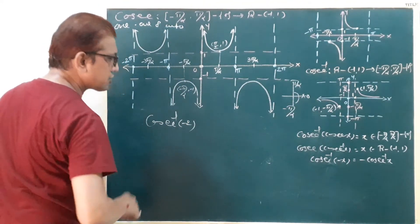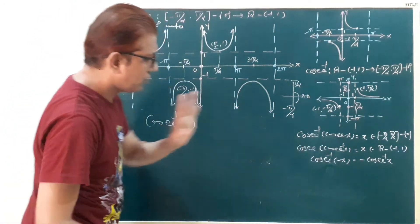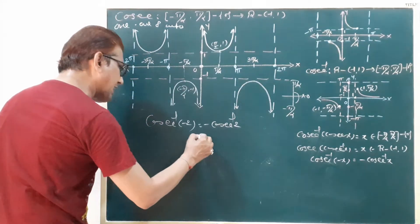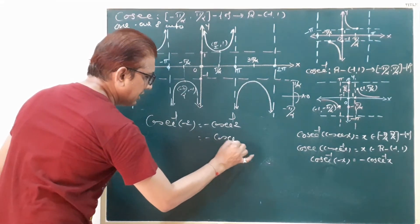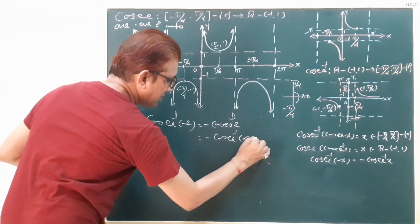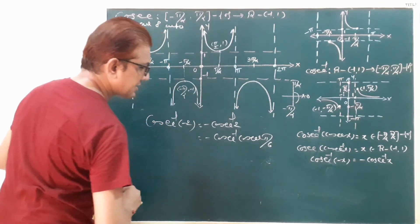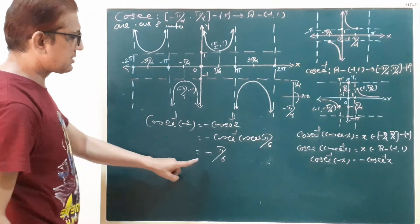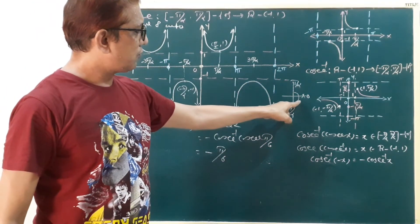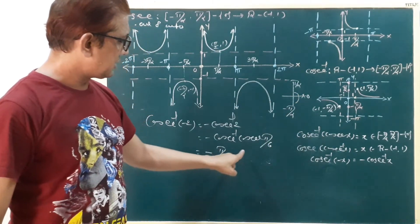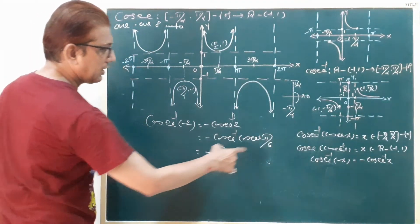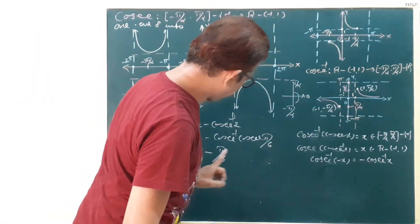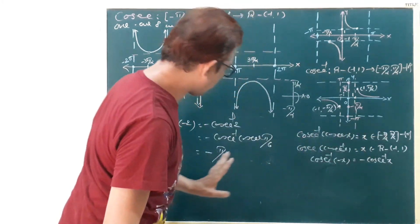Now the fourth sum: cosecant inverse of minus 2. We write minus cosecant inverse 2, then the same calculation as the first sum: cosecant inverse of cosecant pi by 6. The negative sign remains, cosecant and inverse cancel, so the answer is minus pi by 6. This is in the fourth quadrant, from minus 90 to 0. The answer minus pi by 6 belongs to this condition.